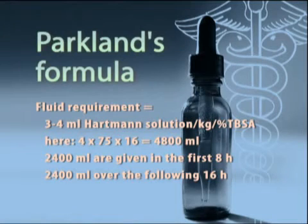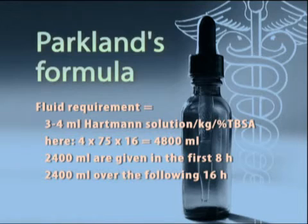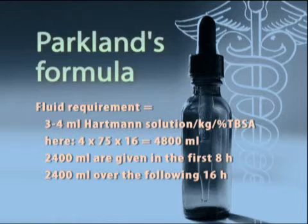Fluid resuscitation can be calculated using Parkland's formula. The fluid requirement equals 3–4 millilitres of Hartmann's solution per kilogram per percentage of total burn surface area. Therefore, in this case, our patient's fluid requirement equals 4,800 millilitres. Half of which is given in the first 8 hours and the second half is given over the following 16 hours. Monitor resuscitation and adequacy with pulse, blood pressure, ECG, respiratory rate, pulse oximetry, ABGs, and urinary catheter as appropriate. The most reliable and therefore most important one is urine output.